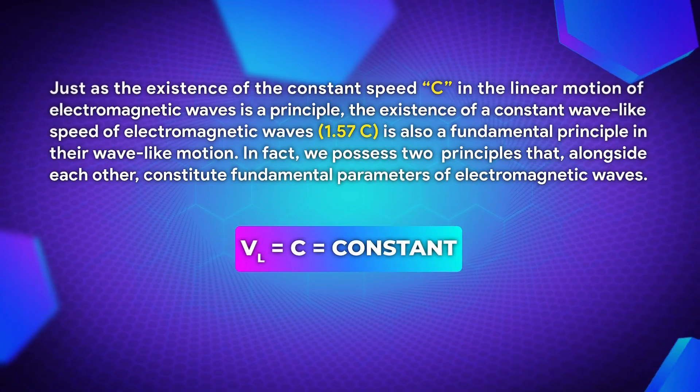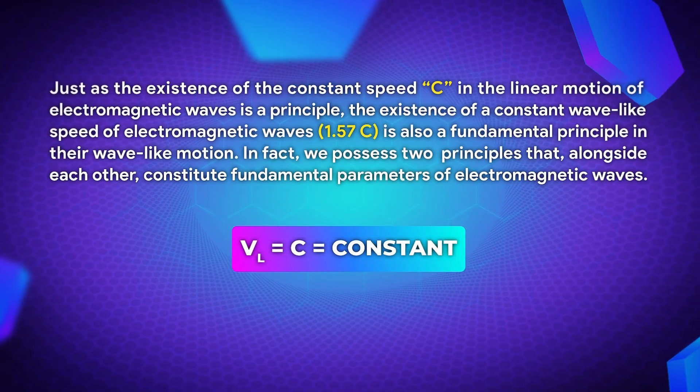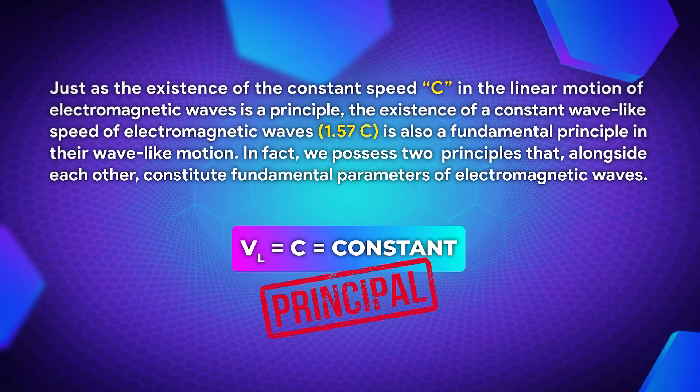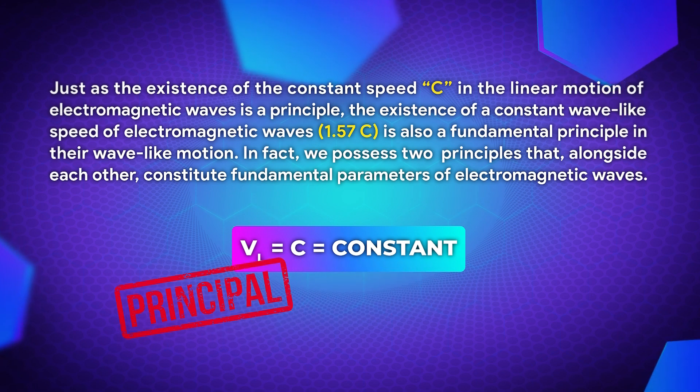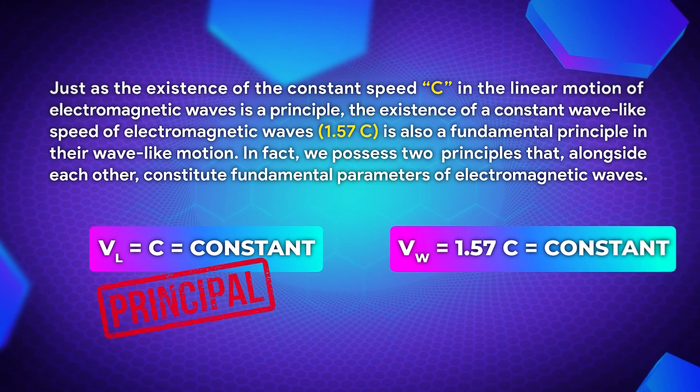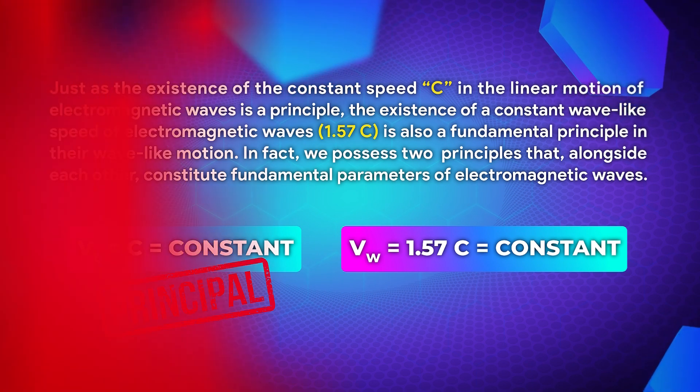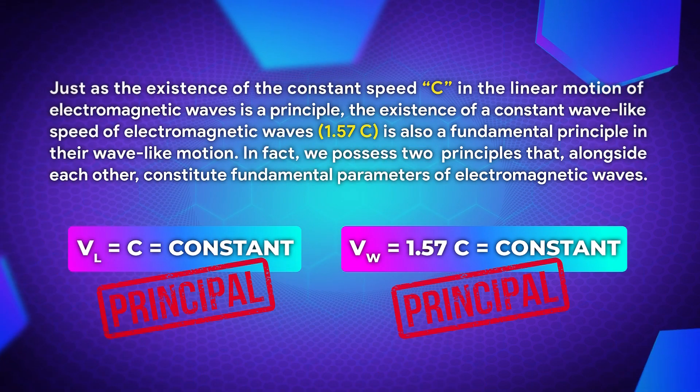Just as the existence of the constant speed C in the linear motion of electromagnetic waves is a principle, the existence of a constant wave-like speed of electromagnetic waves (1.57C) is also a fundamental principle in wave-like motion. In fact, we possess two principles that, alongside each other, constitute the speed of electromagnetic waves.